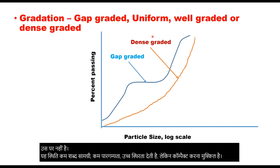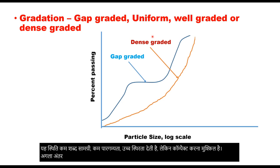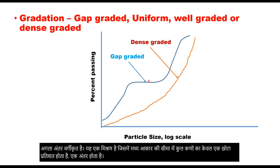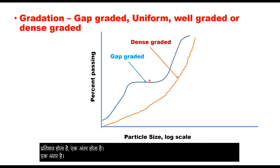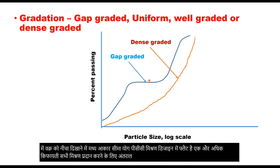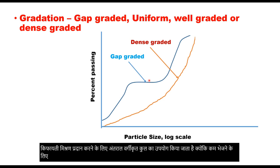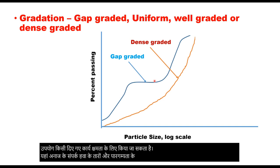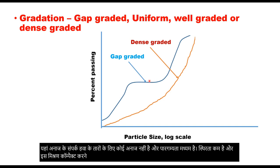The next type is gap graded. It is a mix that contains only a small percentage of aggregate particles in the mid-size range — there is a gap in the grading and the curve is flat in the mid-size range. Some PCC mix designs use gap graded aggregate to provide a more economical mix since less sand can be used for a given workability. There is no grain-to-grain contact, air voids and permeability are moderate, stability is low, and this mix is easy to compact. Stone matrix asphalt is one typical example of a gap graded mix.